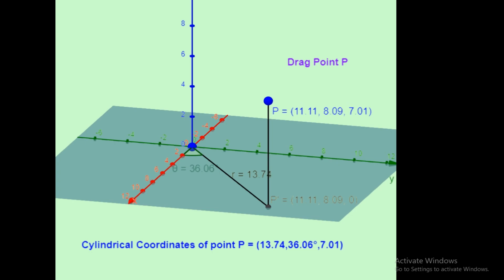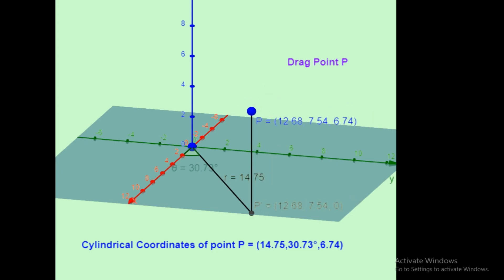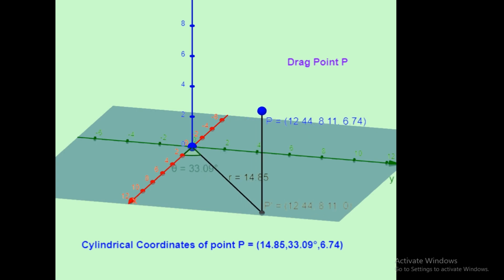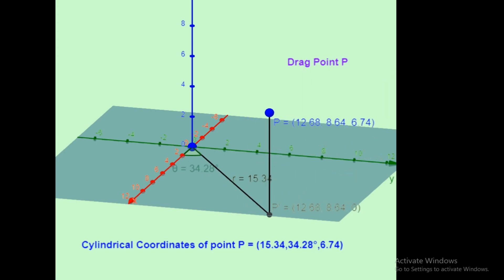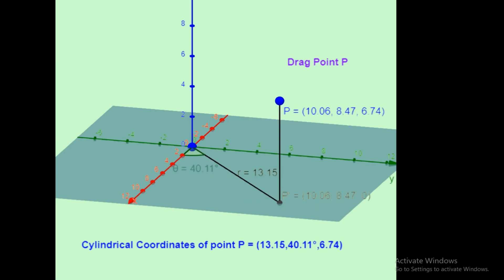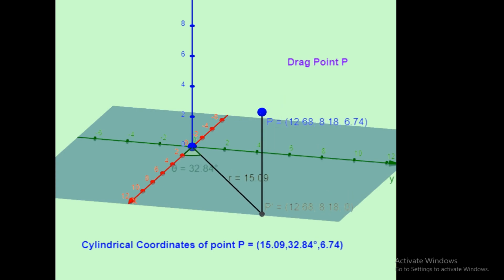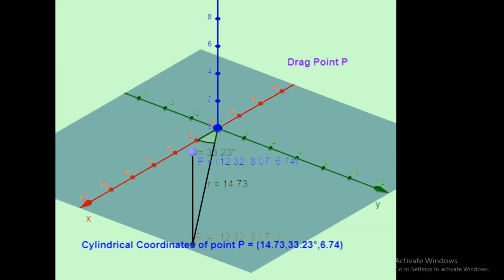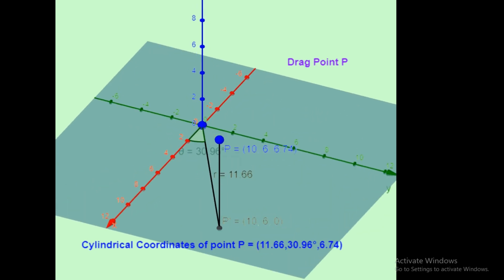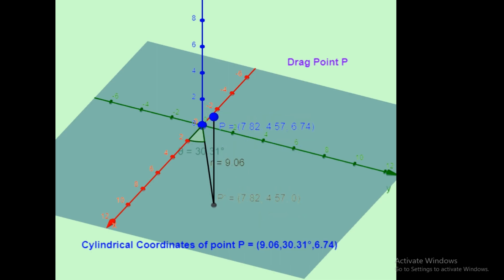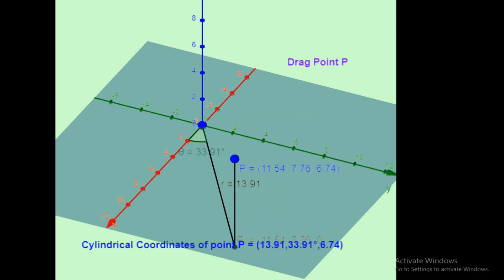First, I will vary the angle phi. I can sweep the x-y axis and move anywhere I want just by varying this angle. If I want to go closer to the origin, I will vary the radius, which we call rho in the cylindrical system.